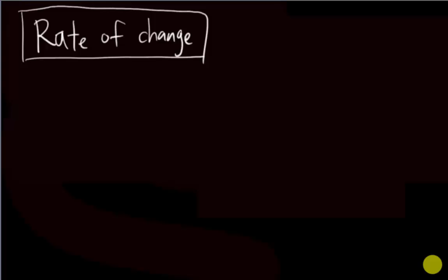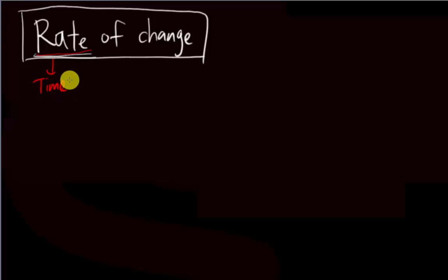Today I'm going to make a short video to explain what is rate of change, where a lot of students still find this chapter very difficult. Whenever we see the word 'rate', it actually means time. For example, if I want to give you some examples about rate, you will know about speed, or velocity. Speed is distance over time.